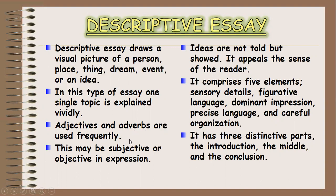Adjectives and adverbs are used frequently — you cannot write a descriptive essay unless you have used adjectives and adverbs frequently. The essay may be subjective or objective in expression: subjective means giving your own opinion, while objective means describing the thing as it is. Importantly, ideas are not just told but shown — it appeals to the senses of the reader. A descriptive essay comprises five elements: sensory details, figurative language, dominant impression, precise language, and careful organization.